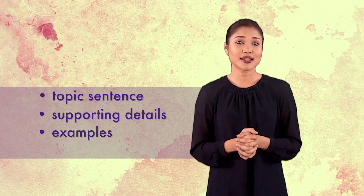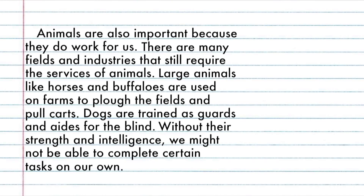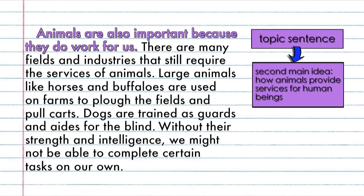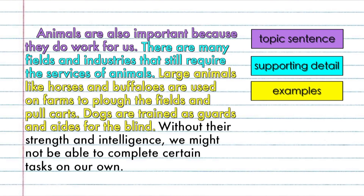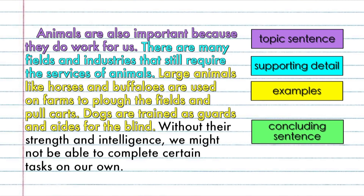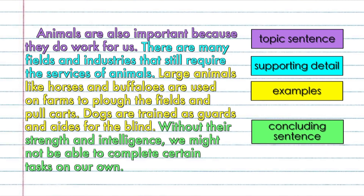Then, continue writing the second paragraph in the same style. Make sure to include the topic sentence, supporting details, examples, and concluding sentence in the correct order. This is my second paragraph of the main body. This is the topic sentence, followed by the supporting detail — I explained that there are many industries that need animals to work for them. Here, I have provided two different examples to support my main idea. Here is my concluding sentence for the paragraph — I added that animals can work for us due to their strength and intelligence, which again helps to support the main idea.